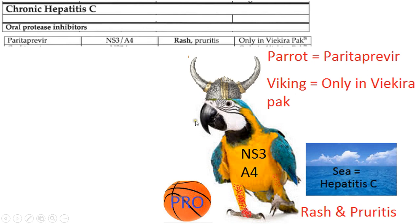Another drug for chronic hepatitis C is paritaprevir. Here's a parrot — this parrot is three years old but is turning four today, so NS3/4A. He's wearing a Viking party hat for his birthday. Unfortunately, the parrot partied too hard and now has a rash. He belongs to a professional basketball player — protease inhibitor. He comes from South America by the sea — hepatitis C. The Viking hat is because this is only found in the Viekira Pak.